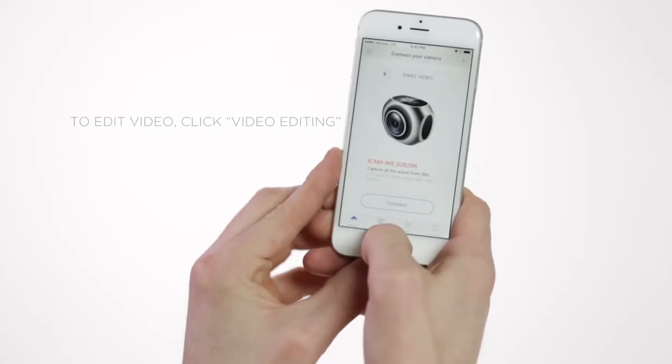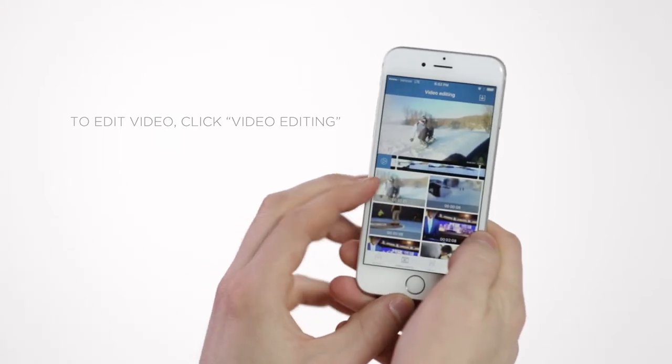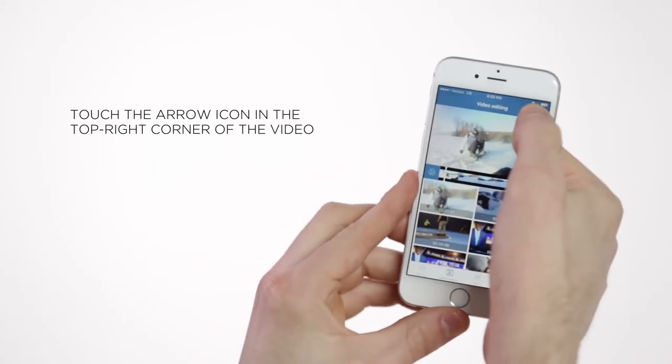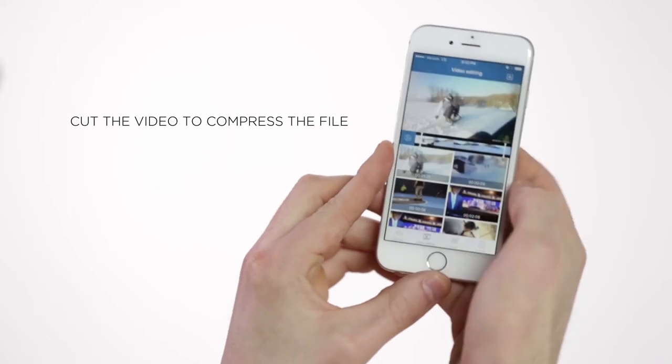To edit video, click Video Editing. Touch the arrow icon in the top right corner of the video. Cut the video to compress the file.